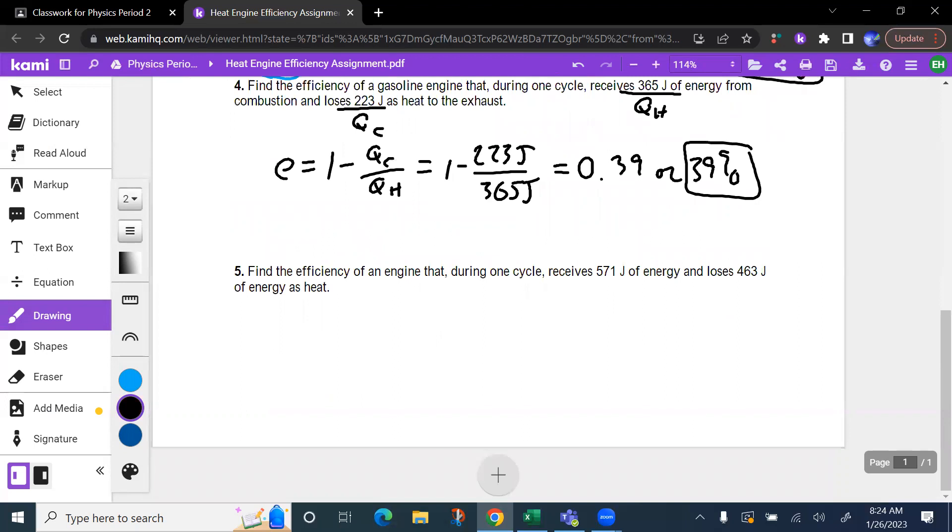And then finally, we're going to find the efficiency, E, during one cycle. We're receiving, that's Qh, 571 joules of energy and losing 463. So pretty much the same type of problem as number four. We're going to go 463 divided by 571. And then we're going to take 1 minus that answer. And we get about 0.19 or 19% efficiency.